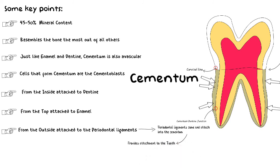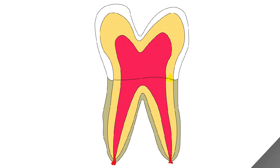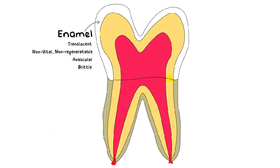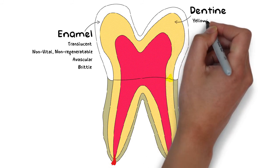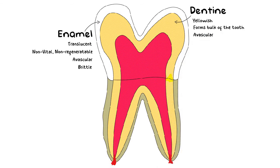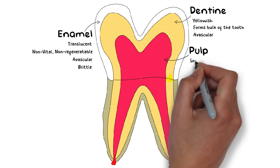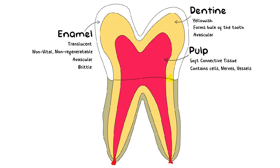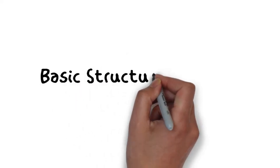I will discuss the periodontal ligaments in detail in another video as that is a different topic altogether. As a small summary: the tooth has three layers. In the crown, the outermost layer is the hard, translucent enamel — non-vital, non-regeneratable, avascular, very hard, and brittle. The next yellowish layer is the dentine, which forms the bulk of the tooth. The innermost soft layer is the pulp, containing cells, nerves, and vessels, providing vitality to the tooth. In the root, the outermost layer is replaced by cementum, which resembles bone but is also avascular.